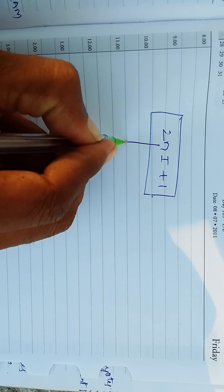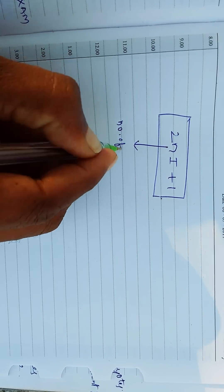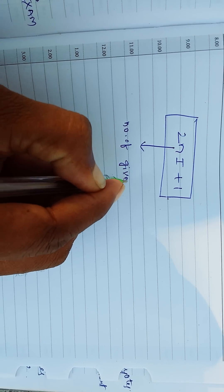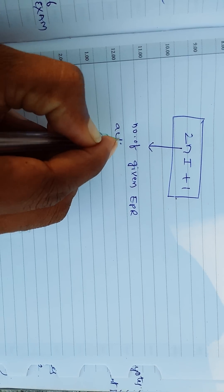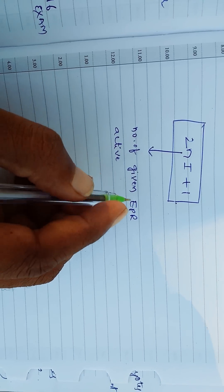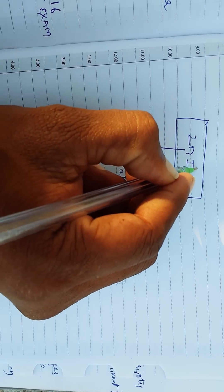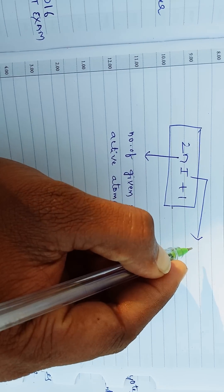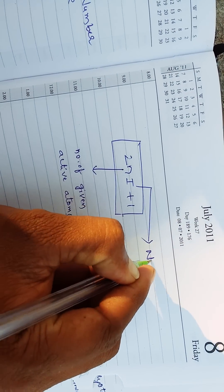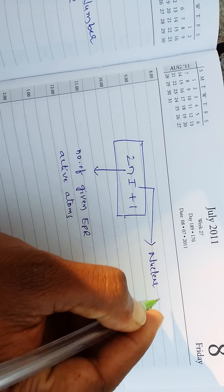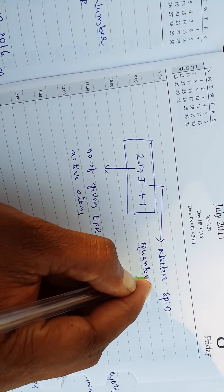To calculate EPR lines of the given complex, we use the formula 2NI + 1. This is the main formula to calculate EPR signals, where N equals the number of EPR active atoms and I equals the nuclear spin quantum number.